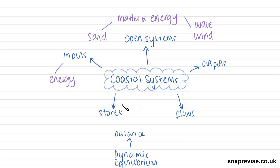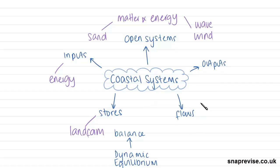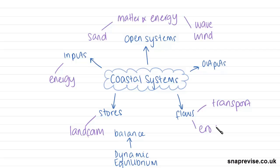Then for our components or our stores, these are things like our landforms — landforms of erosion and landforms of deposition. We also have flows, and our flows will be things like wind or water transport. This is when the wind or water is transporting our sediment and creating landforms, and also flows such as erosional or depositional processes.